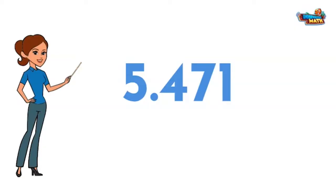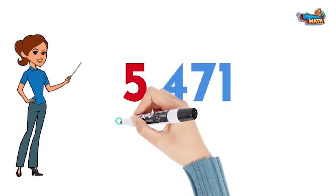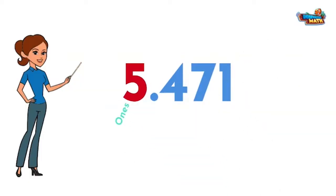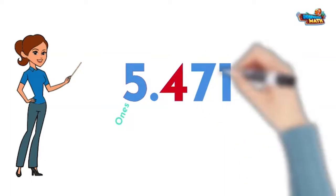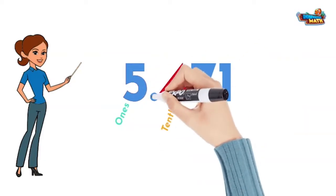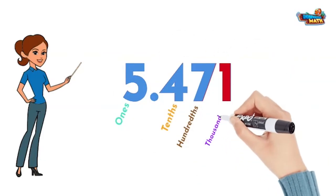Each digit has a value. The five in this number represents five wholes. The numbers after the decimal also have value. The four represents four tenths, the seven represents hundredths, and the one represents the thousandths place.